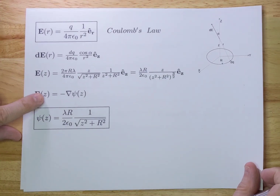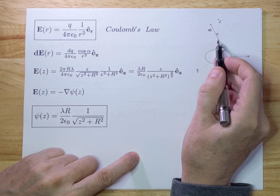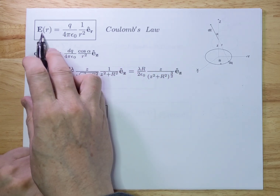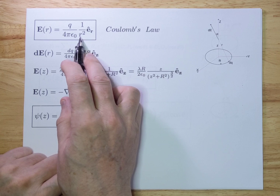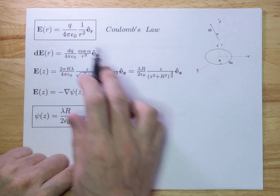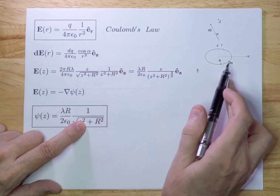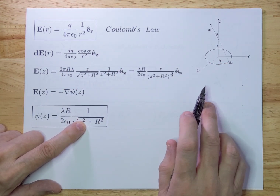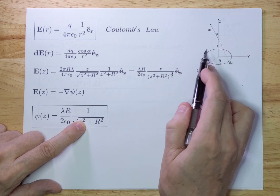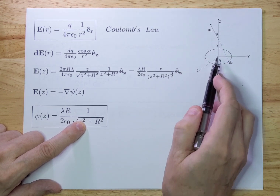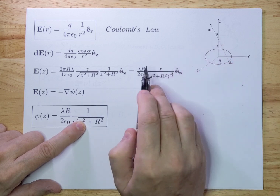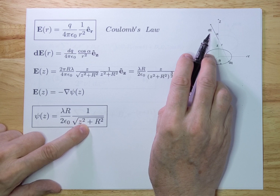Let's start with calculating the electric field on the z-axis from first principles, using Coulomb's law. Coulomb's law tells us that for a charge Q a distance R away, the electric field at that point will be E_R as described. So let's apply Coulomb's law for our ring — we're going to take a very small charge dQ and add them all up to get the electric field at point Z from the XY plane where the ring resides.